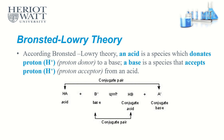Now, Bronsted-Lowry theory. In Bronsted-Lowry theory, an acid is a species that donates protons — a proton donor — and a base is a species that accepts protons — a proton acceptor — from an acid in a chemical reaction.